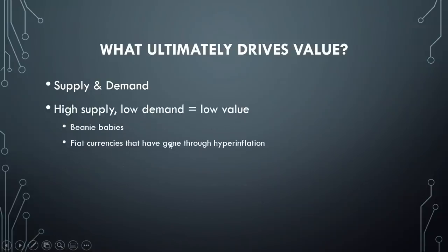When you have something that has a high supply but a low demand — a lot of something and not a whole lot of demand for it — that creates low value. An example of this would be Beanie Babies. For any of you that were old enough to remember that from the nineties, that was a speculative bubble where people were buying and selling these little stuffed animals thinking they were going to continue to appreciate in value over time. Ultimately they created so many of them and the demand fell, which helped crash the prices.